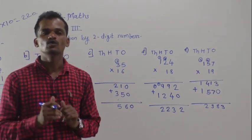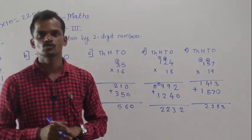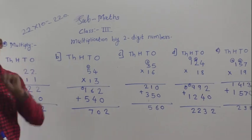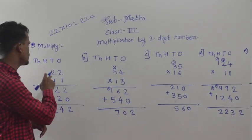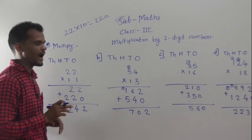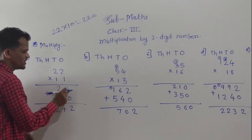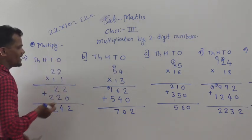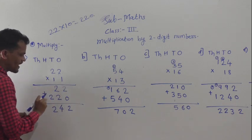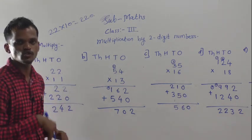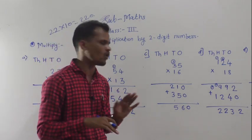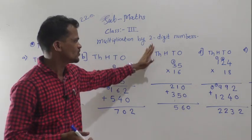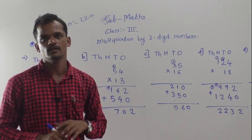So today we have learned how to multiply a number by a 2-digit number. To revise: we solve the example in 3 steps — first multiply by the ones digit, then multiply by the tens digit (writing 0 at the ones place first), then add the 2 products. If you know the tables of that number, you can solve directly; otherwise, use this long multiplication method. Thank you.